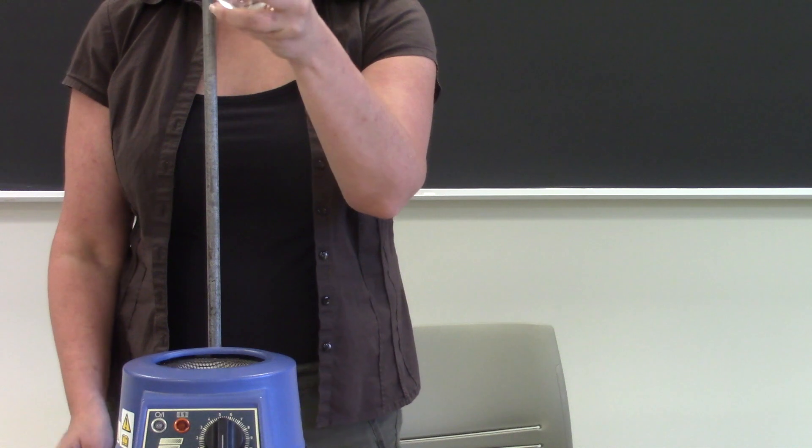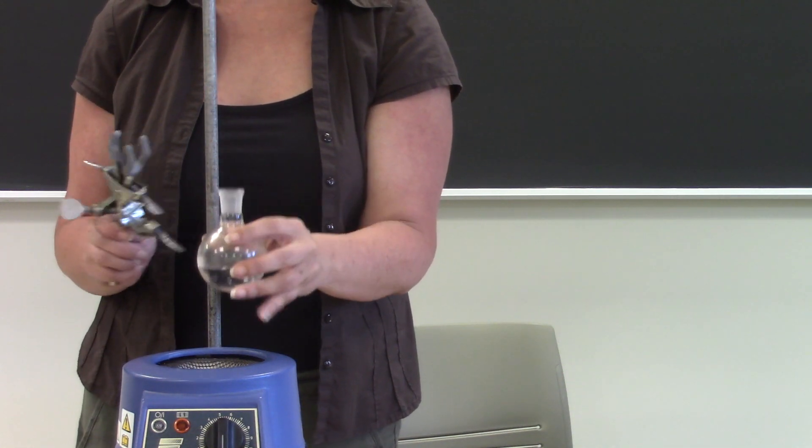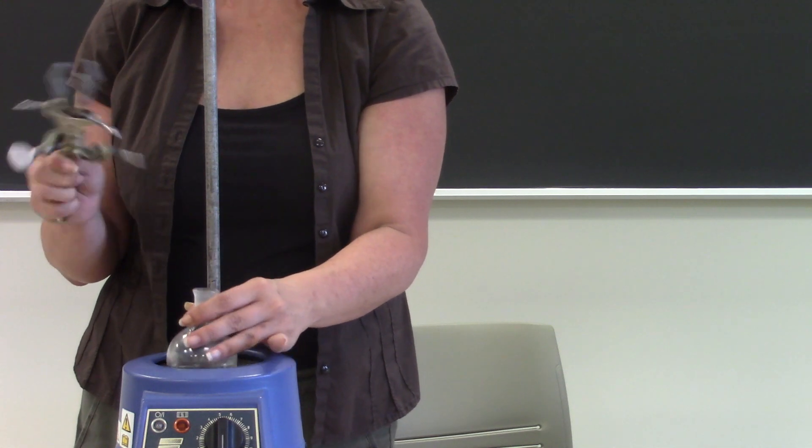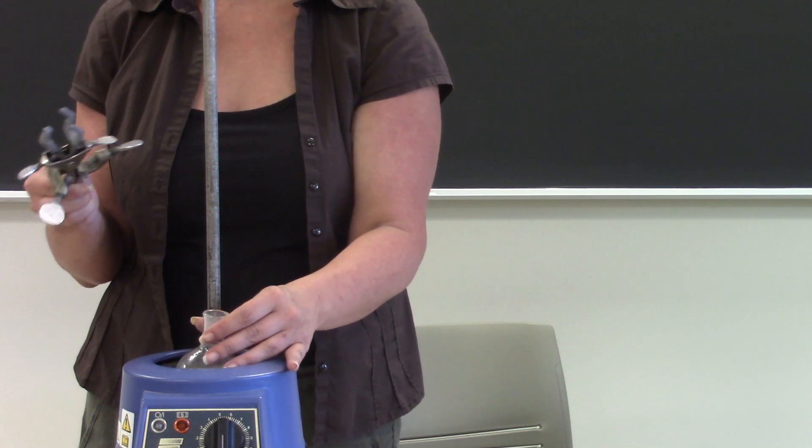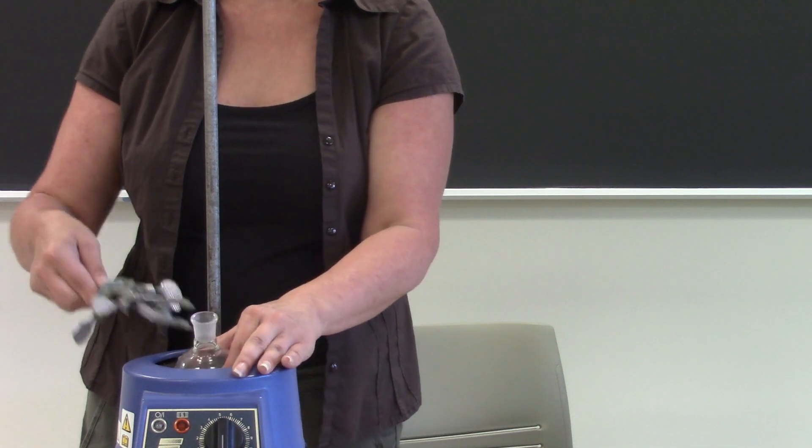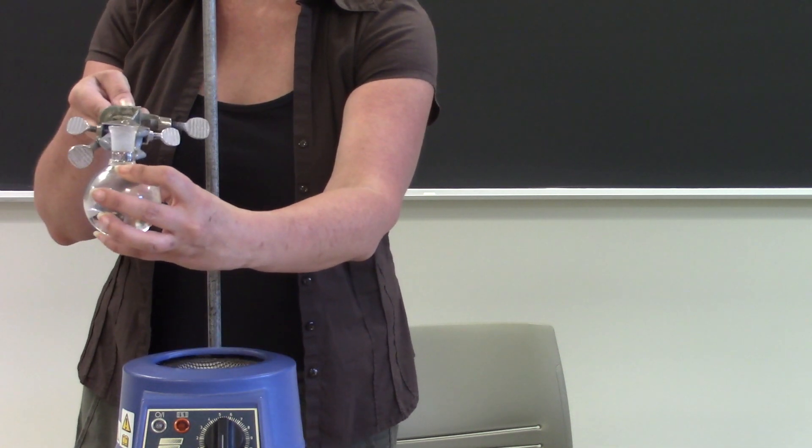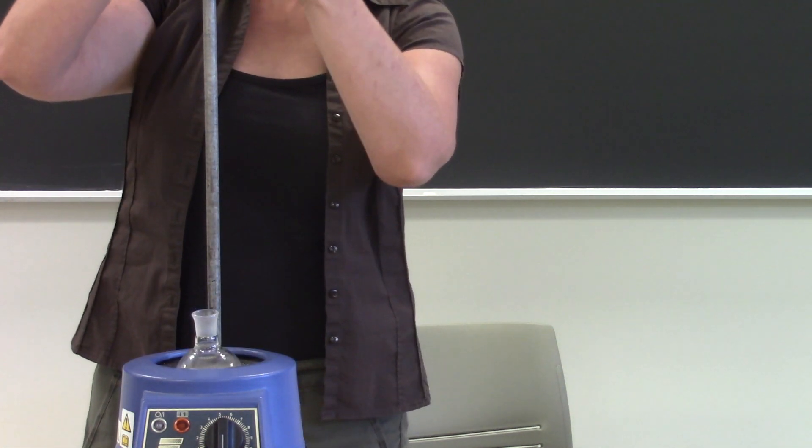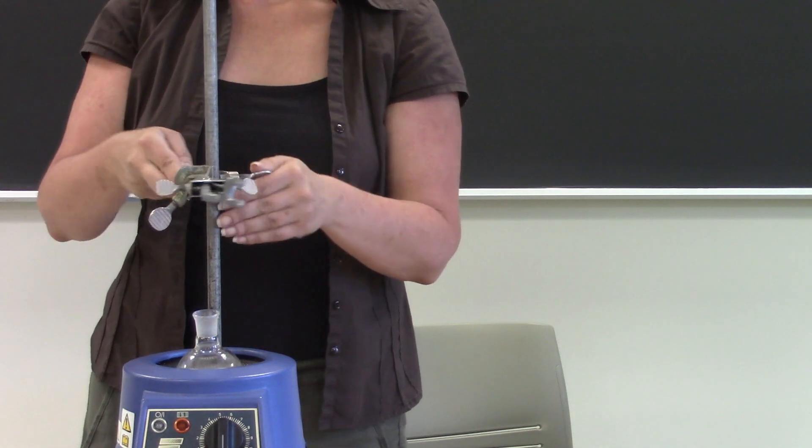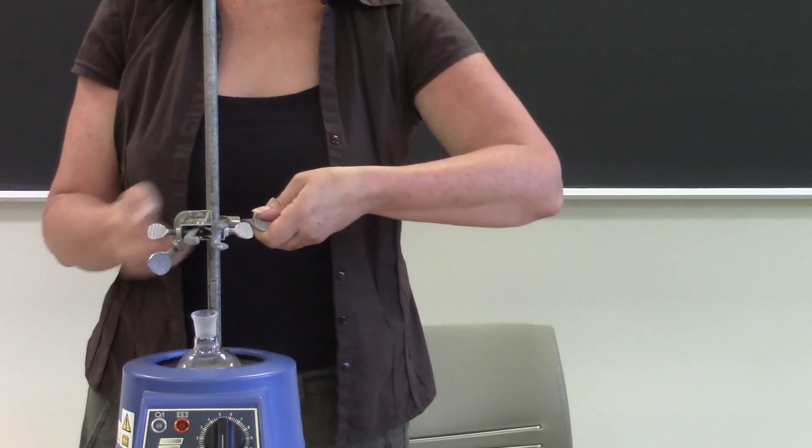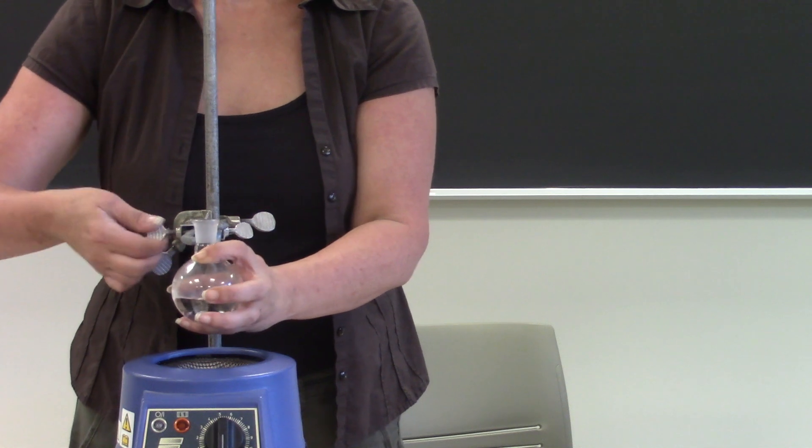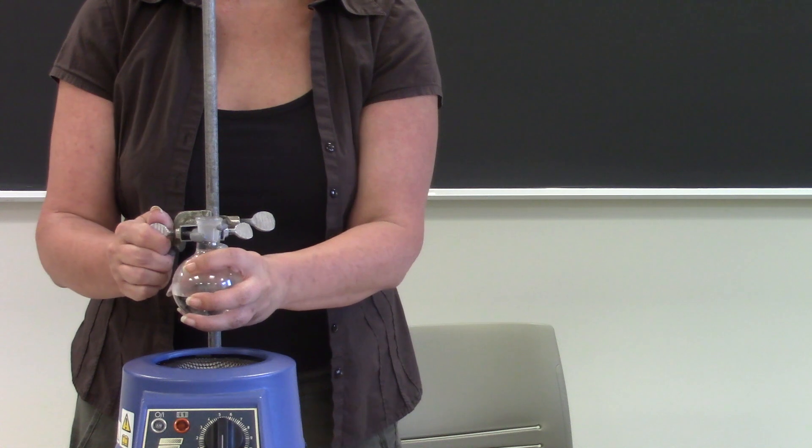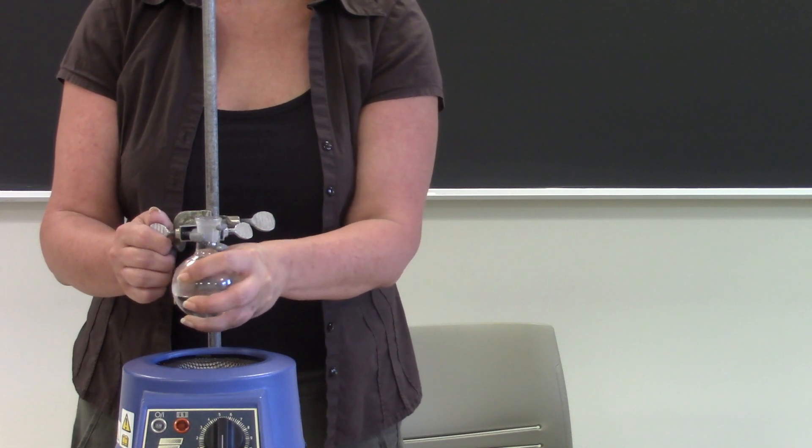So we do need to clamp this, the round bottom flask, very tightly. This is going to be the only clamp that is really tightly supporting the entire apparatus so make sure that you have a good clamp and that it fits the neck of your flask pretty well. So I'm going to go ahead and just put my clamp on and I'm going to clamp my round bottom flask to the ring stand really well so that is very secure.